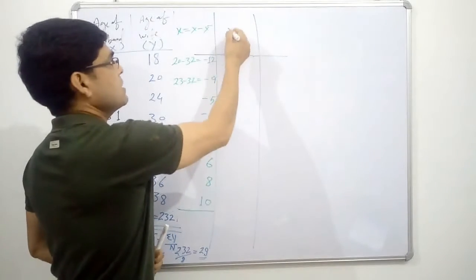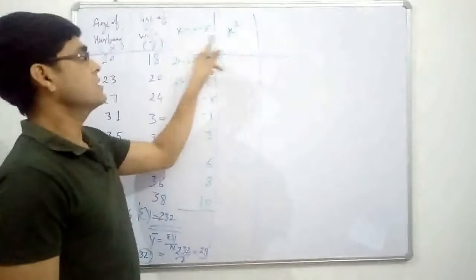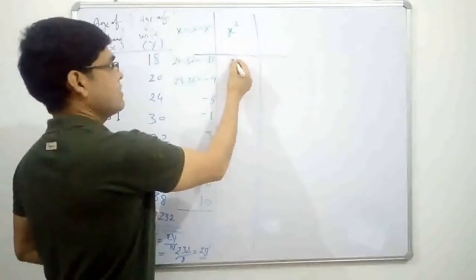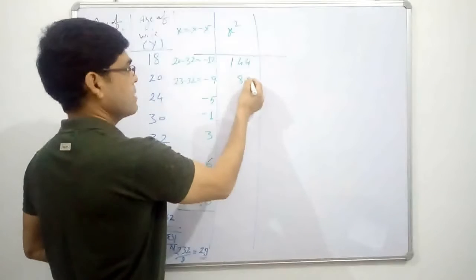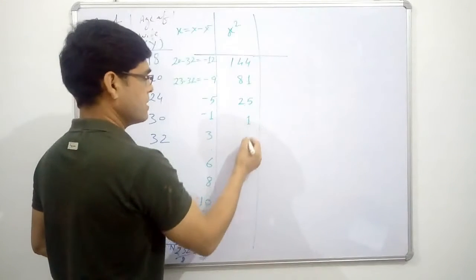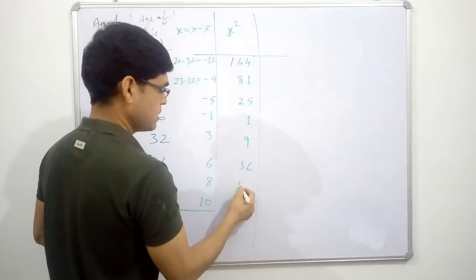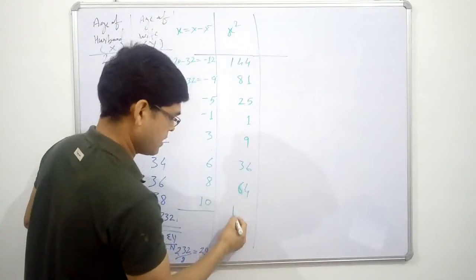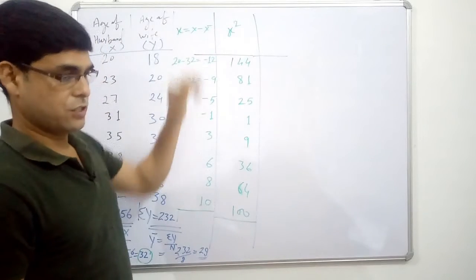Next we need the square of these deviation values, x². So: 12² = 144, 9² = 81, 5² = 25, then 1, 9, 36, 64, and 100. These are the x² (deviation squared) values.